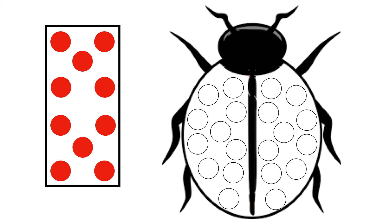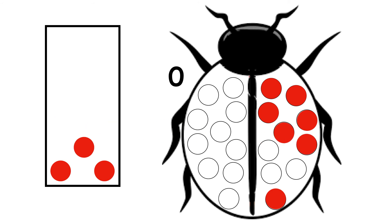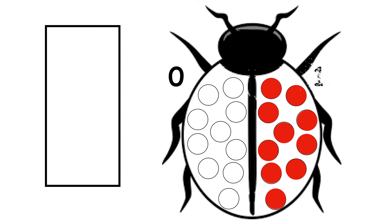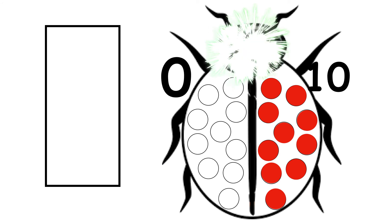Ladybird has no spots. How many more does she need to make 10? 1, 2, 3, 4, 5, 6, 7, 8, 9, 10. 0 and 10 make 10.